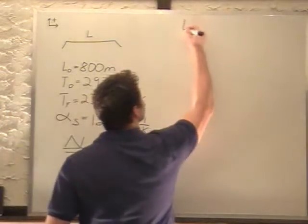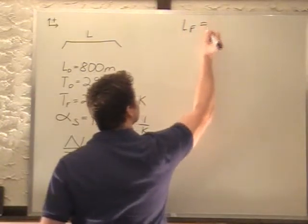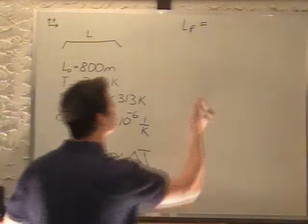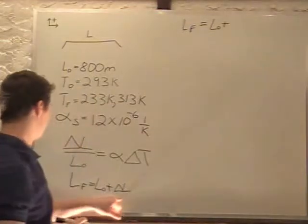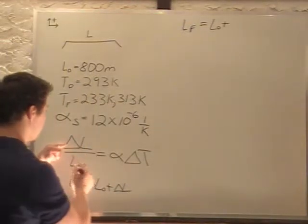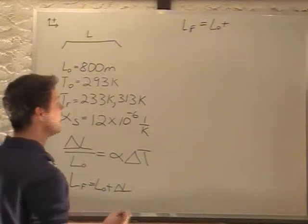So that turns out to be L final equals L0 plus delta L. And delta L is just going to be, if we multiply L0 over to this other side, alpha delta T L0.